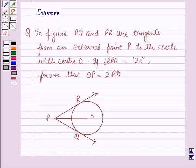Hello and welcome to the session. In this session we'll discuss a question which says that in figure PQ and PR are tangents from an external point P to the circle with center O. If angle RPQ is equal to 120 degrees, prove that OP is equal to 2PQ.